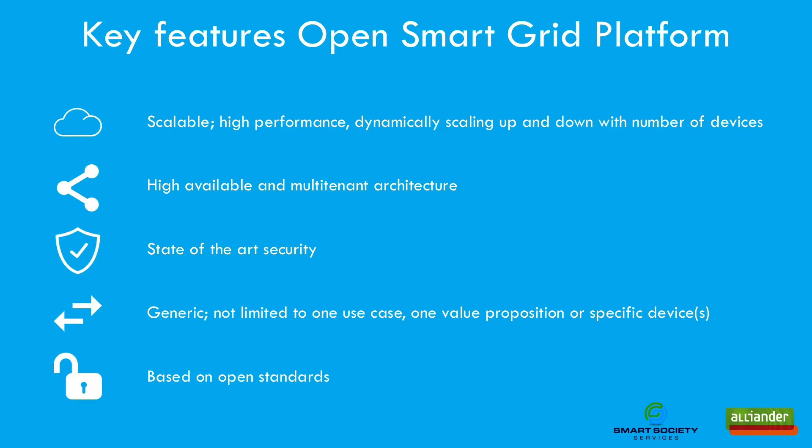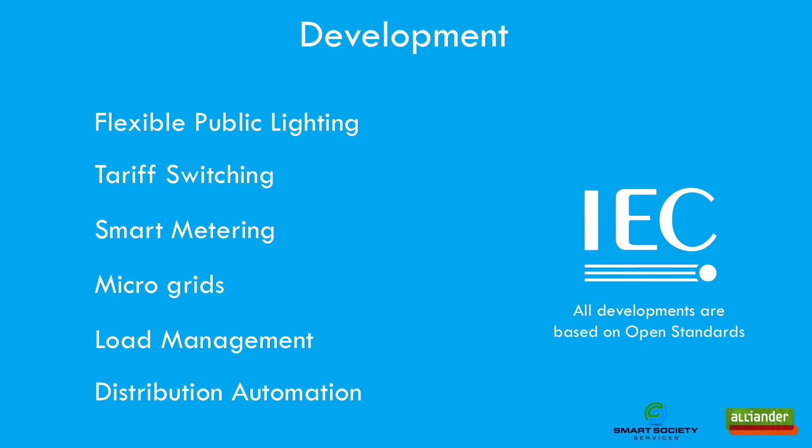The OpenSmart Grid Platform is highly unique for embracing the open-source approach. The platform's key features include delivery of large amounts of commands with high performance, high availability and multi-tenant architectures, built with security by design and regularly tested. The generic design allows use cases and domains to be easily added to the platform, and it is based on open standards and open protocols. At this moment, flexible public lighting, tariff switching and smart metering domains are available. We are currently developing use cases for microgrids, distribution automation and load management. On the protocol side, IEC 61850 support has been added, mainly used within the distribution automation domain. For smart metering, DLMS/COSEM is implemented.